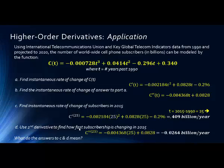And now it says use the second derivative to find out how fast subscribership is changing in 2015. And so what's happening here is we're trying to find how fast the change is happening. And so when we plug in 25 into the second derivative, notice we get a negative answer: C''(25) = -0.004368(25) + 0.0828 = -0.0264 billion/year. So what does this mean?